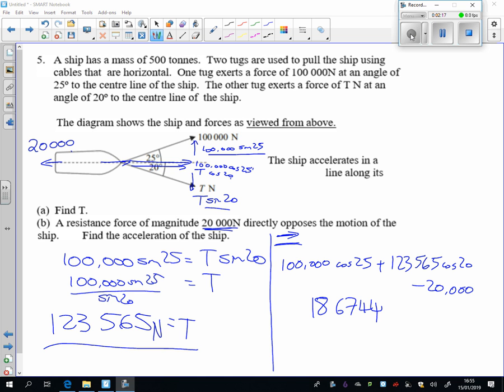So this is the force that's taking it off to the right hand side. Now of course force equals the mass times the acceleration. The mass is 500 tonnes, so that's 500,000 kilograms.